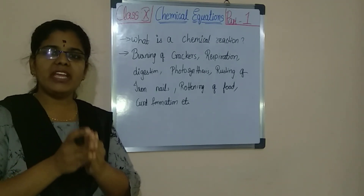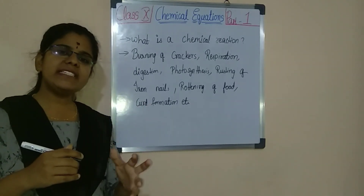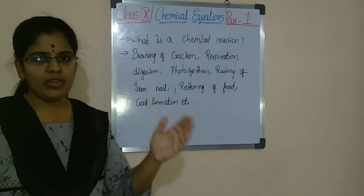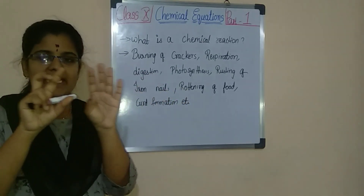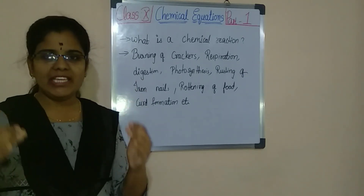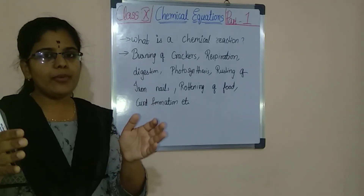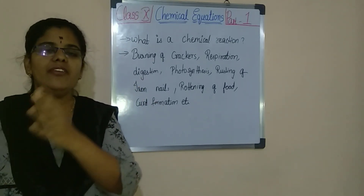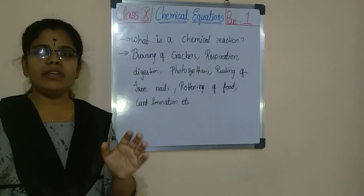So what is a chemical equation? Whatever chemical reactions are going on, when we write it in the form of an equation — mentioning what all are involved in that reaction, what process is undergoing, and what products they give out — then we say it as a chemical equation.